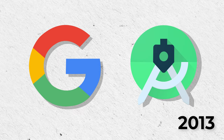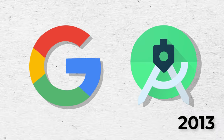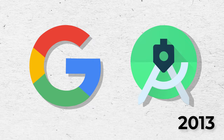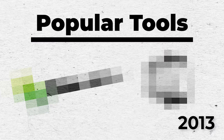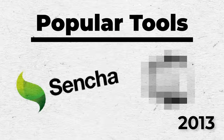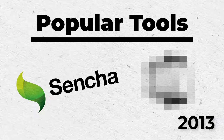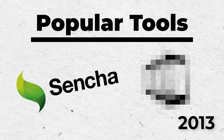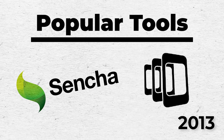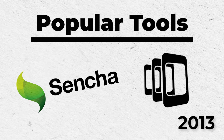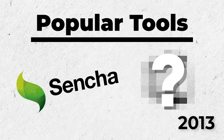2013 doesn't have a lot of events, but Google launched Android Studio, which became the go-to tool to build Android applications and changed how cross-platform apps were developed for Android. Different tools became popular as well, like Sencha Touch, and Adobe had acquired PhoneGap, which was now their own service.